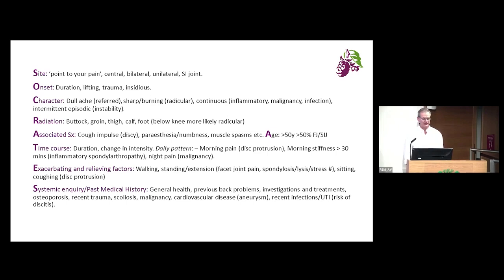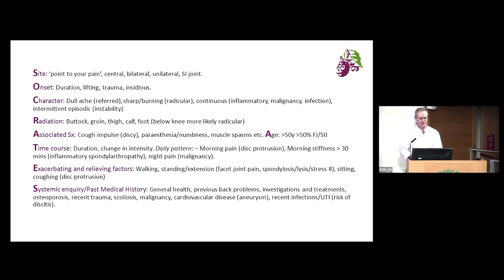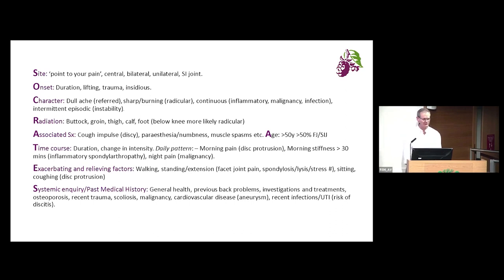Ask about the onset, duration, how long it's been going on, how it started, any trauma involved, or whether it started slowly. Is there an ache or a sharp pain? A dull ache may be referred somatic pain; if it's sharp or burning, it may be radicular or neuropathic. Is it continuous — as in inflammatory, malignant, or infection-related pain? If it's episodic or periodic, that may indicate segmental, lumbar, or discogenic instability.